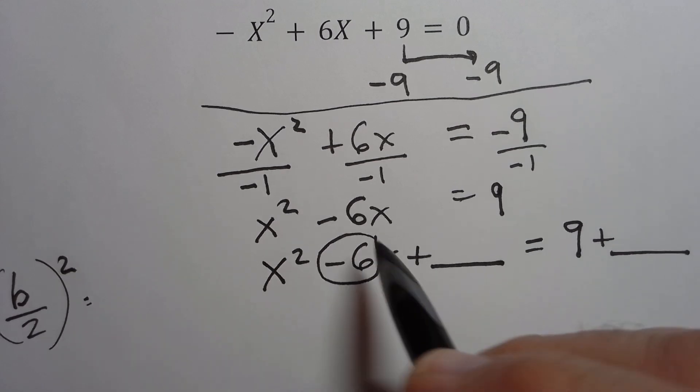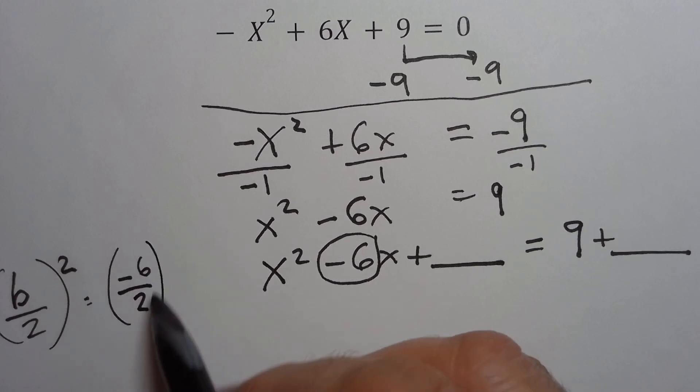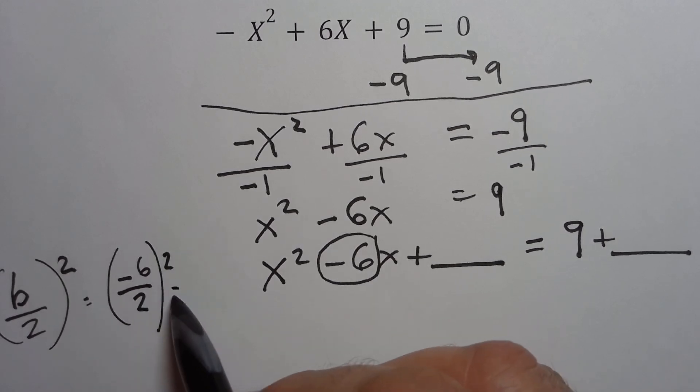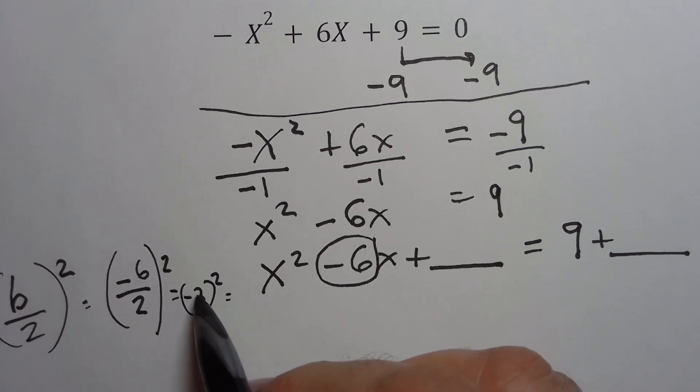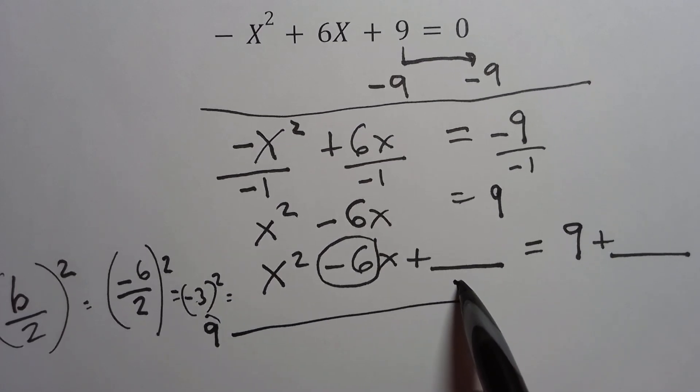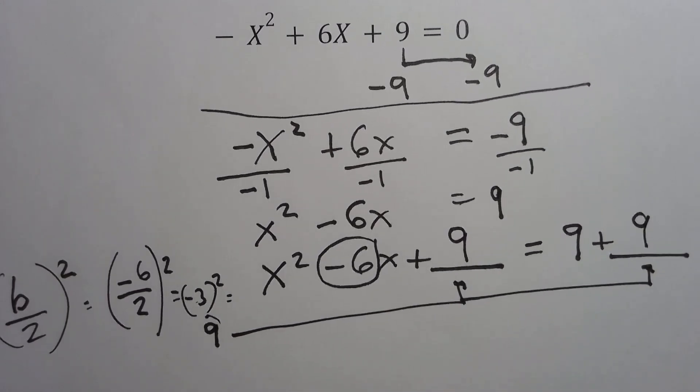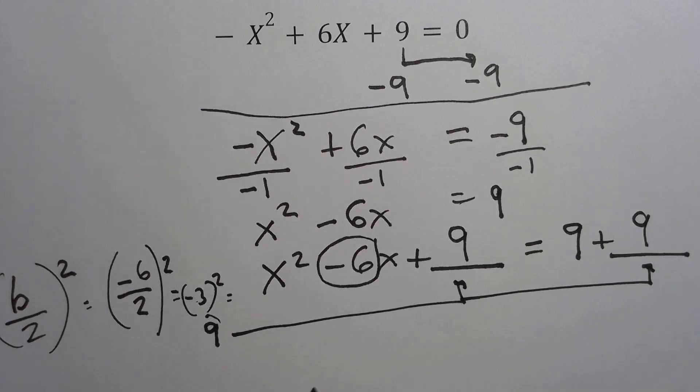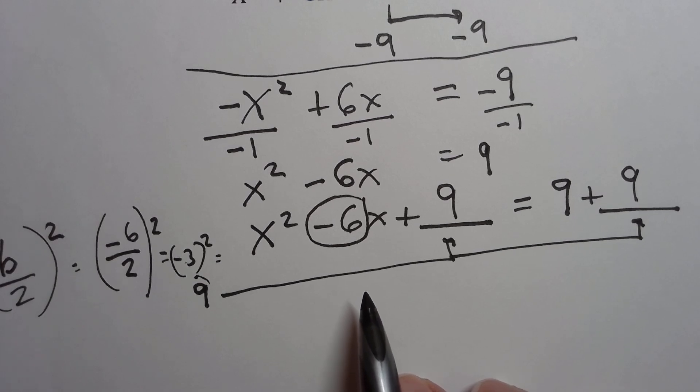So our b term in this case is negative 6. We're going to divide by 2, and we're going to square it. So we're going to do what's inside here first. So negative 6 divided by 2 is negative 3 squared. Negative 3 squared is positive 9. In this case, we're squaring the negative because it's inside the parentheses. So we have a positive 9. That's what we're going to add here. And we're going to add it here. So it still remains in balance. Anytime you do something to the left side, as long as we do the same thing to the right side, we're still in balance. And that is okay.